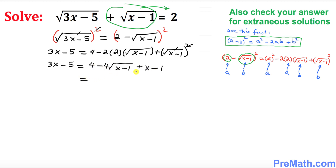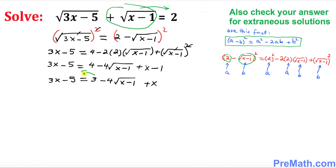Combining like terms on the right-hand side: 4 minus 1 is 3, minus 4 square root of x minus 1, plus x. The left-hand side is 3x minus 5. Now we want to isolate the square root part, so move 3 and x to the other side.